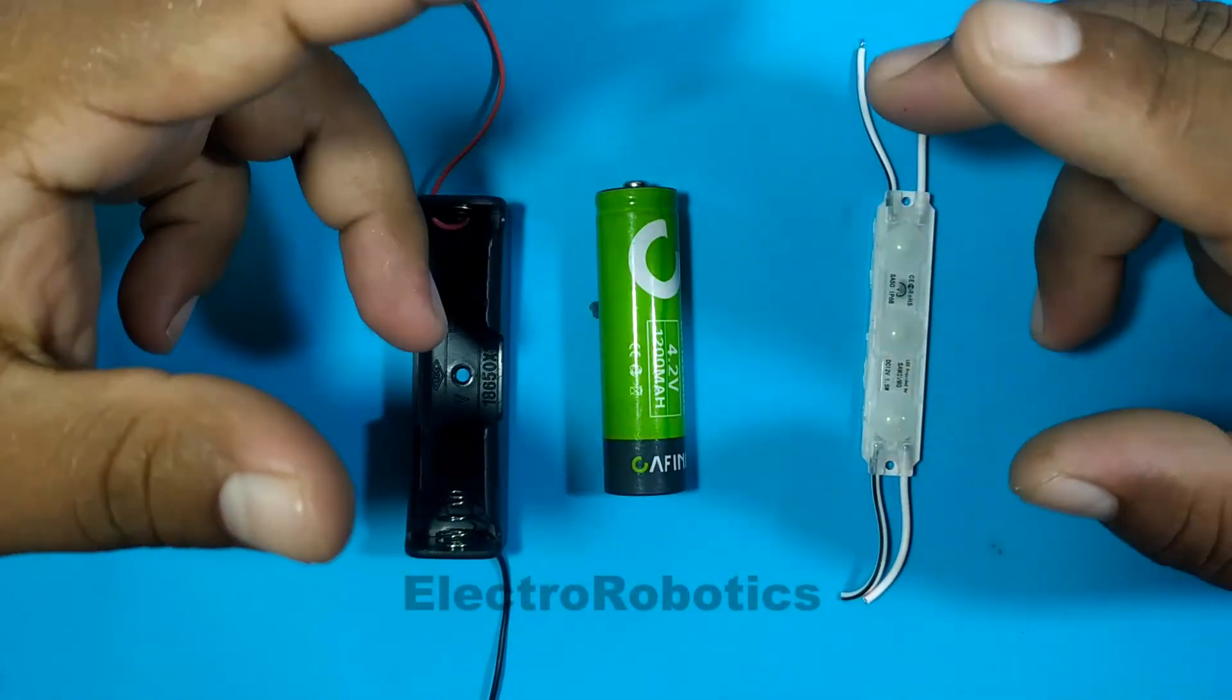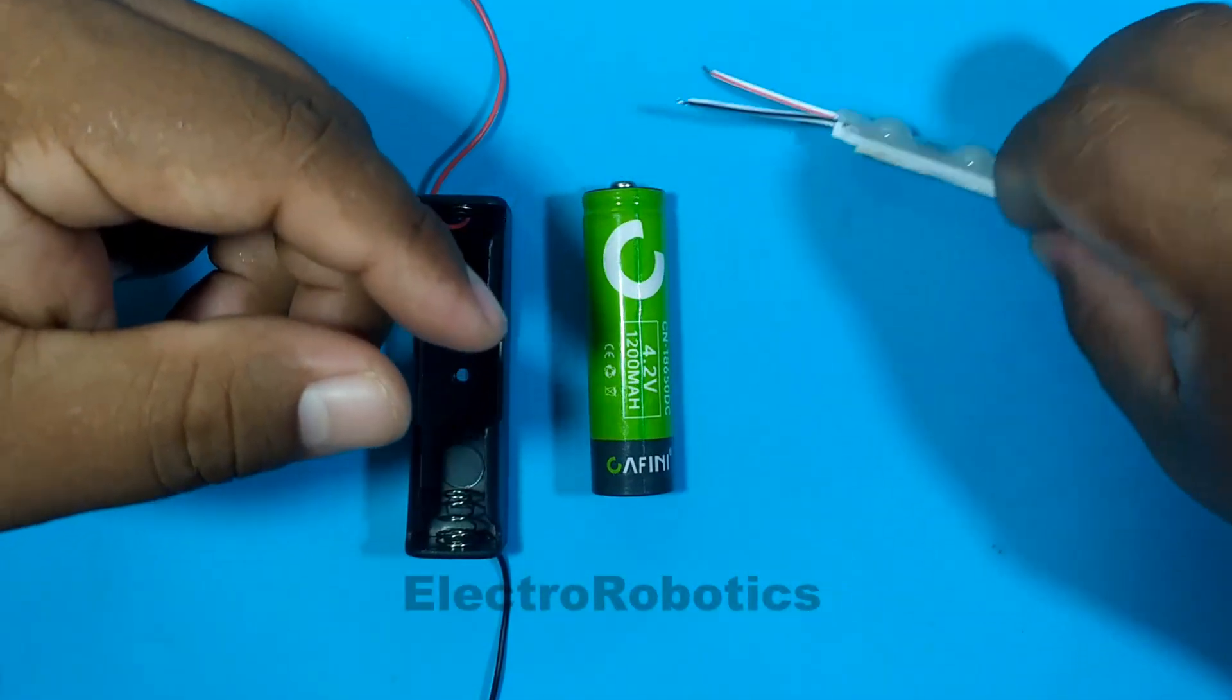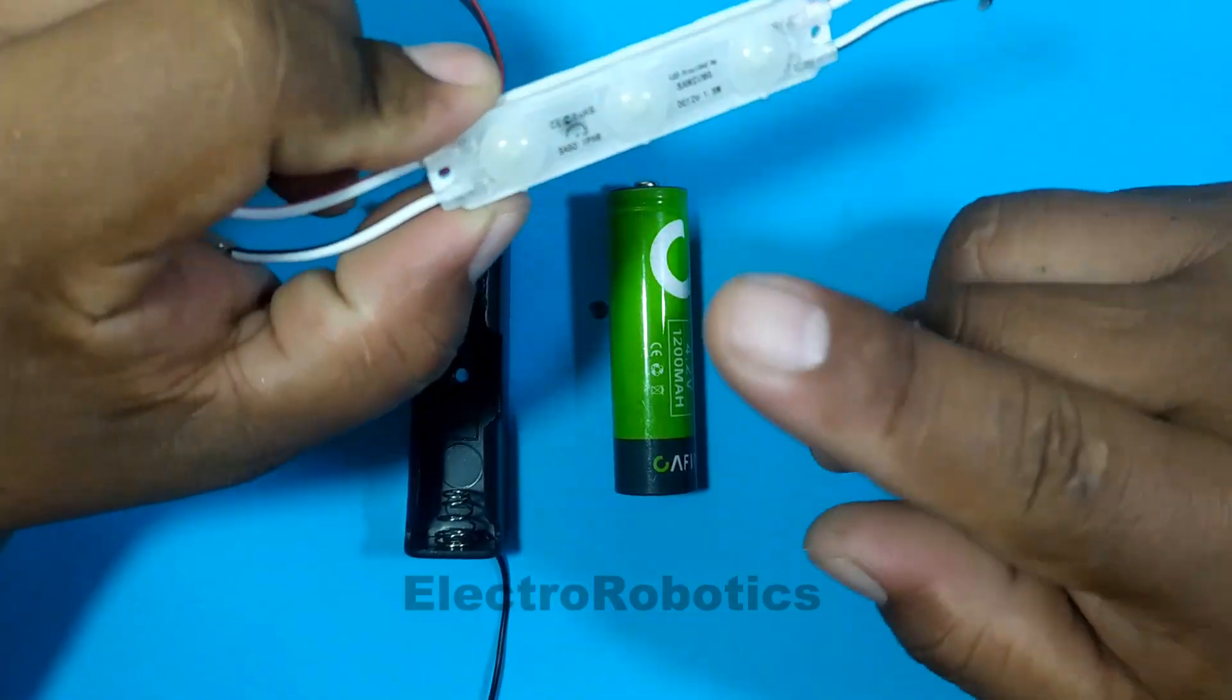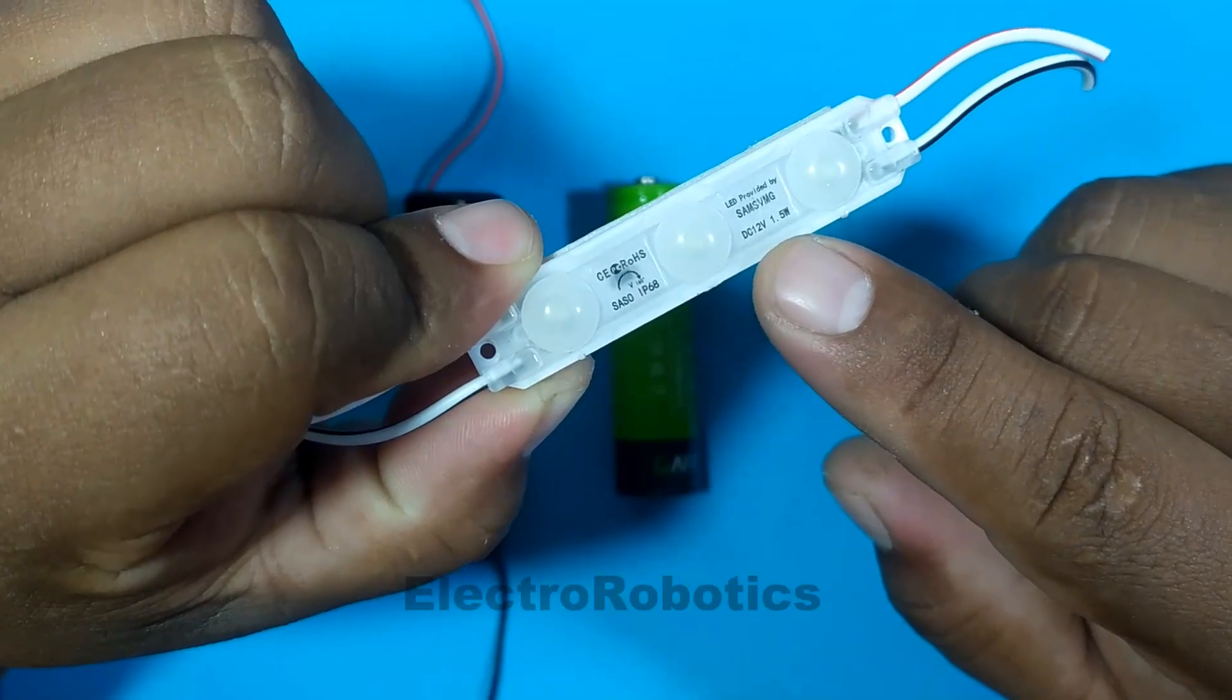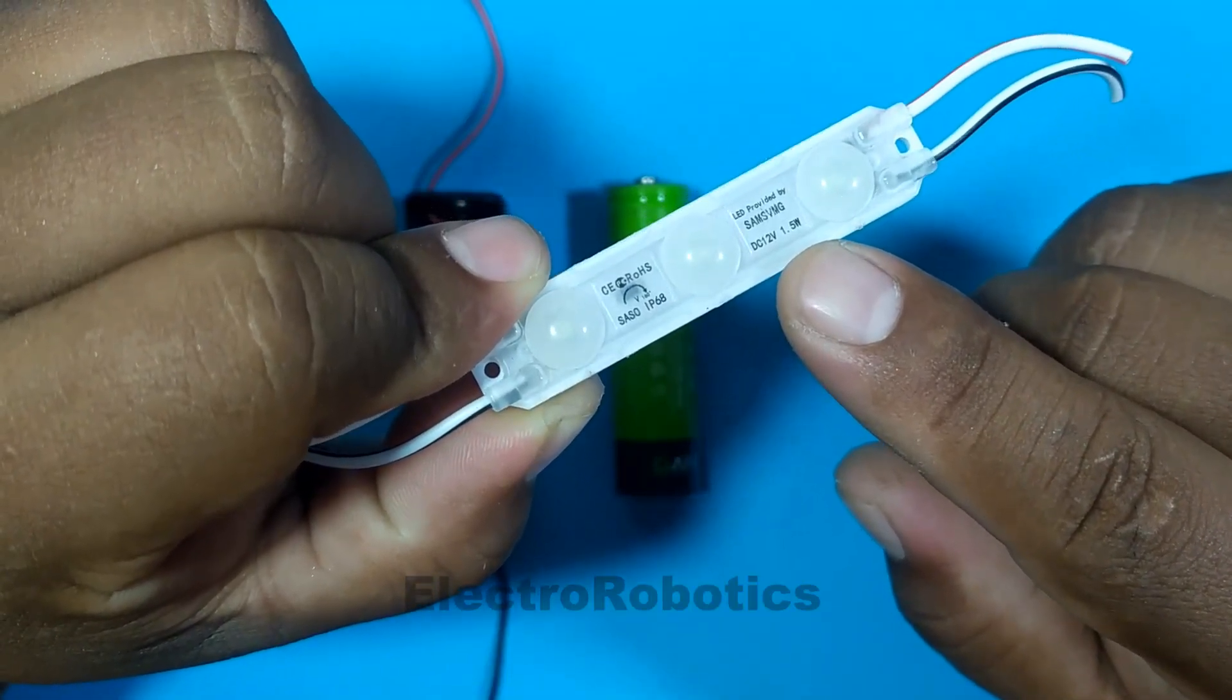Hello boys and girls, this is Professor Nelson from Electronics speaking. On this occasion, we will learn how to turn on this 3LED module which works at 12 volts with a power of 1.5 watts.